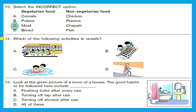Question 14: which of the following activities is unsafe? Option A — children boarding a bus in a queue: safe. Option B — kids running on a staircase: unsafe activity, so we already have our answer. Option C — a kid swimming under adult supervision using a swimming tube: safe. Option D — a kid cycling wearing a helmet: absolutely safe. So option B is the right answer as the unsafe activity.